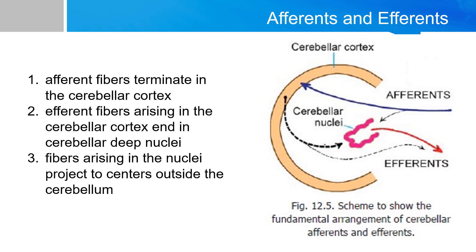The fundamental points regarding cerebellar connections are that afferent fibers terminate in the cerebellar cortex, efferent fibers from the cerebellar cortex end in the cerebellar nuclei, and fibers from those nuclei project to centers outside the cerebellum. There are important exceptions: some incoming fibers project directly to the cerebellar nuclei, and some cortical areas provide output directly outside the cerebellum.